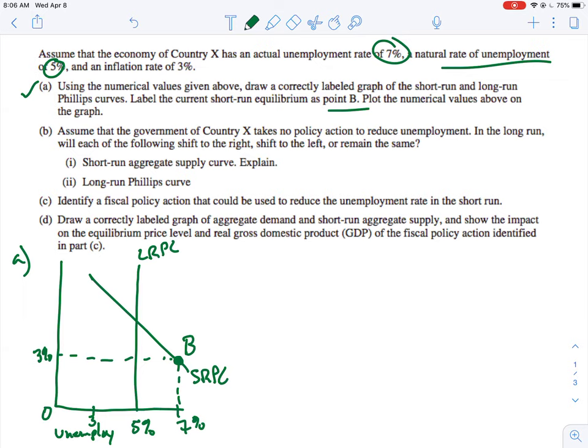Now, assume that the government of country X takes no policy action to reduce unemployment. In the long run, what's going to happen? So this is a question. Will the economy resolve itself if you don't do anything? And the answer is yes, the economy will resolve itself, but of course there will be pain associated with that situation where you have an unemployment rate of 7% with a natural rate of unemployment at 5%.